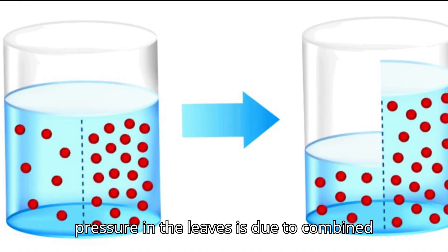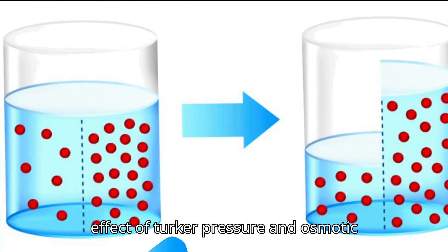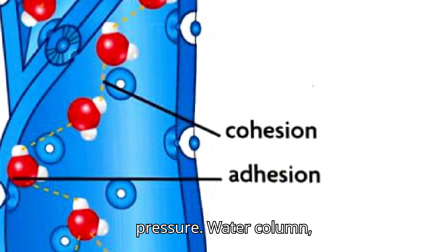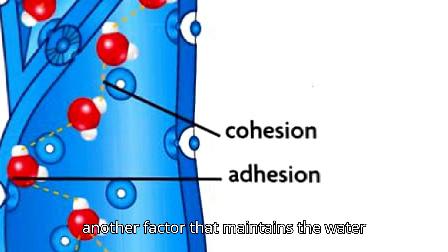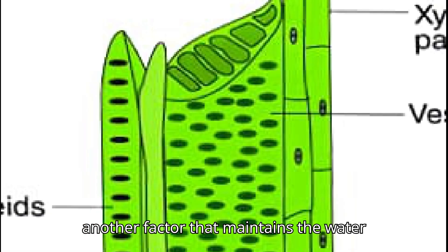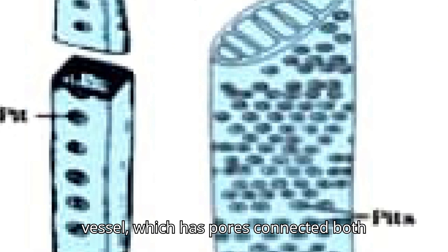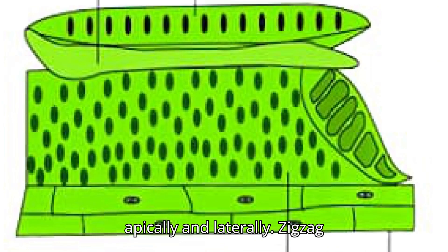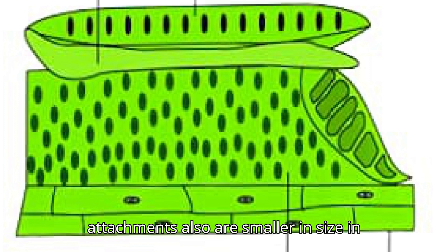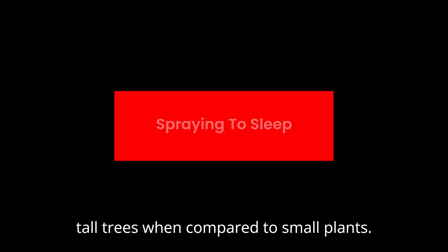This high pressure in the leaves is due to the combined effect of turgor pressure and osmotic pressure. Another factor that maintains the water column in the xylem depends on the structure of the xylem — tracheids and vessels — which have pores connected both apically and laterally in zigzag attachments, and are smaller in size in tall trees compared to small plants.